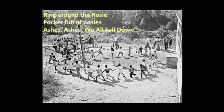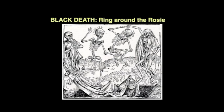I bet all of you played Ring Around the Rosie at some point. It's a lovely little song — but it's actually a Black Death song. 'Ring around the rosie' means that little pink spot that develops on your skin before the bubons break out. 'Pocket full of posies' has to do with the fact that the dead are covered with flowers. And 'ashes, ashes, we all fall down' is a recognition that everyone must die and eventually turn to dust. This is a medieval depiction of the danse macabre.